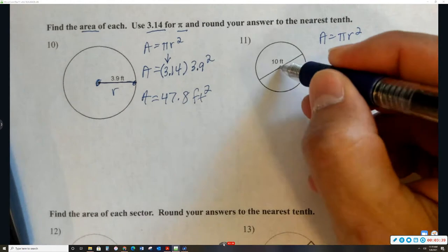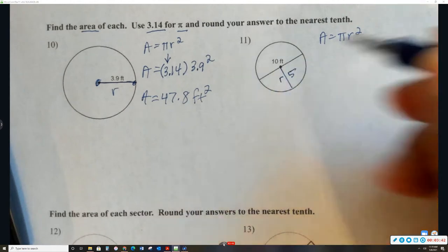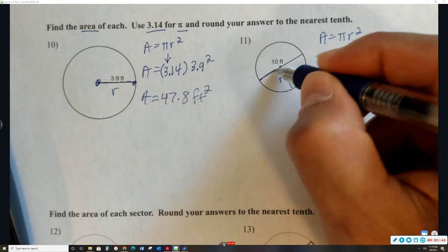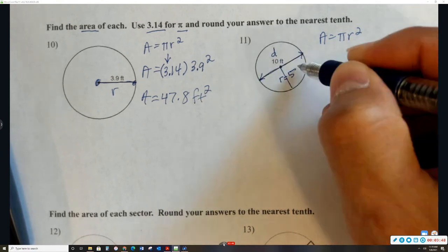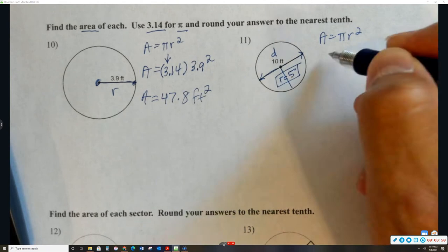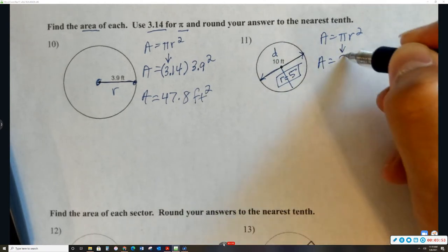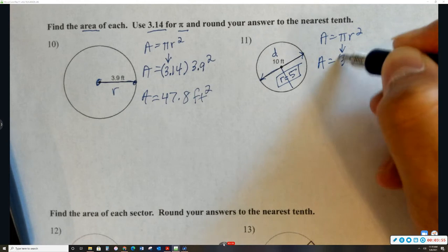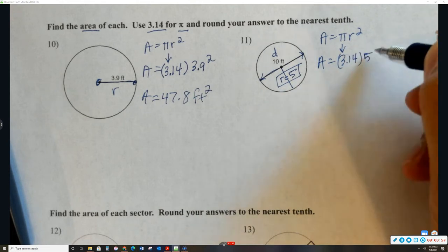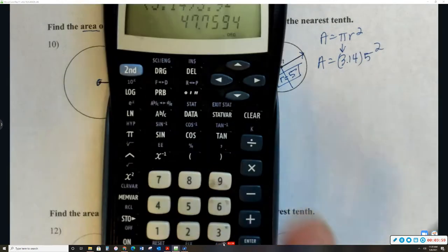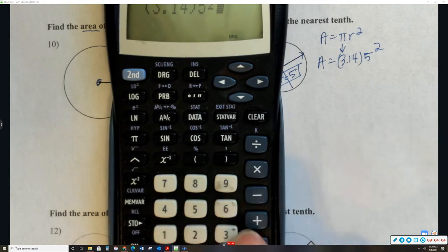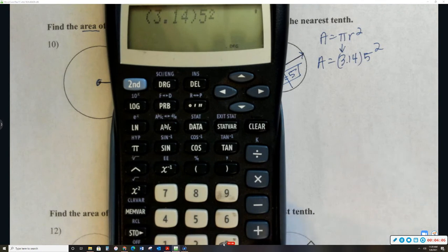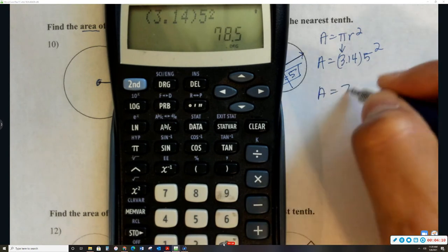And again, this one, the radius is 5 because this measurement is the diameter. So I'm going to say the area is pi, but instead of pi, we're using 3.14 for these. The radius is 5 squared. So let me go with 3.14, close the parentheses, 5 squared, push enter, and then that's a nice 78.5.